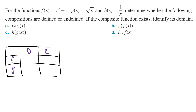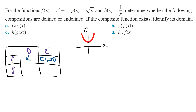f of x is a parabola shifted one unit up. Doing a quick sketch of f of x, the domain of f is going to be all real numbers, and the range of f is going to be from 1 to infinity. Writing this in the table, the domain of f is all real numbers, and the range is from 1 to infinity.